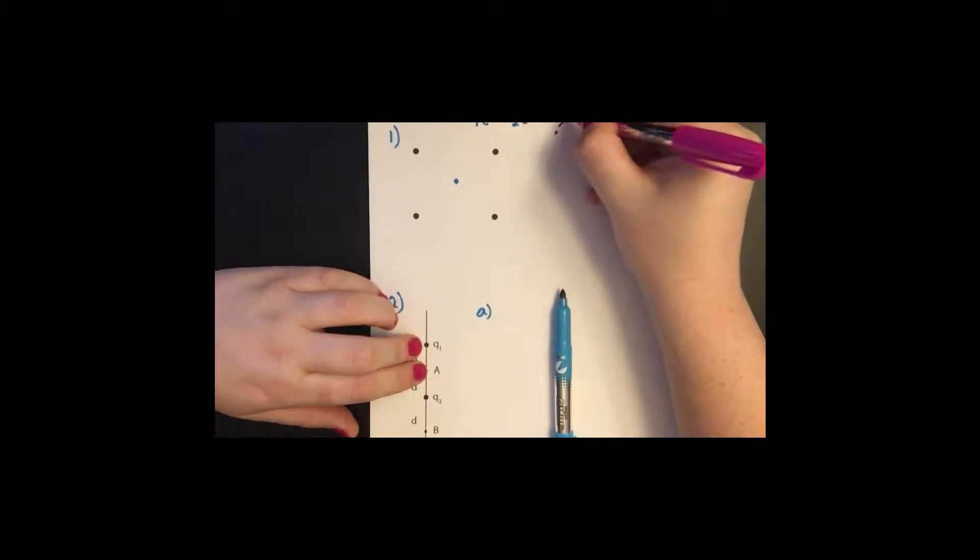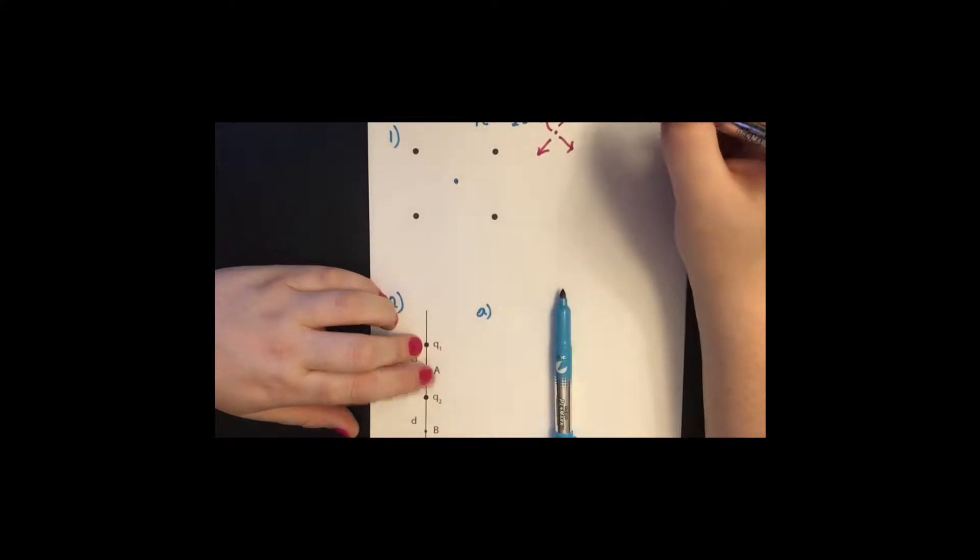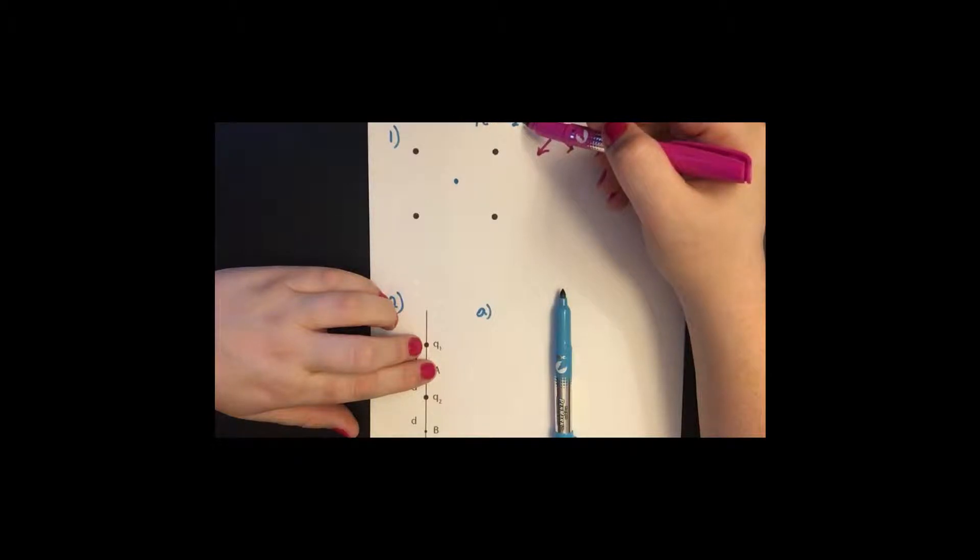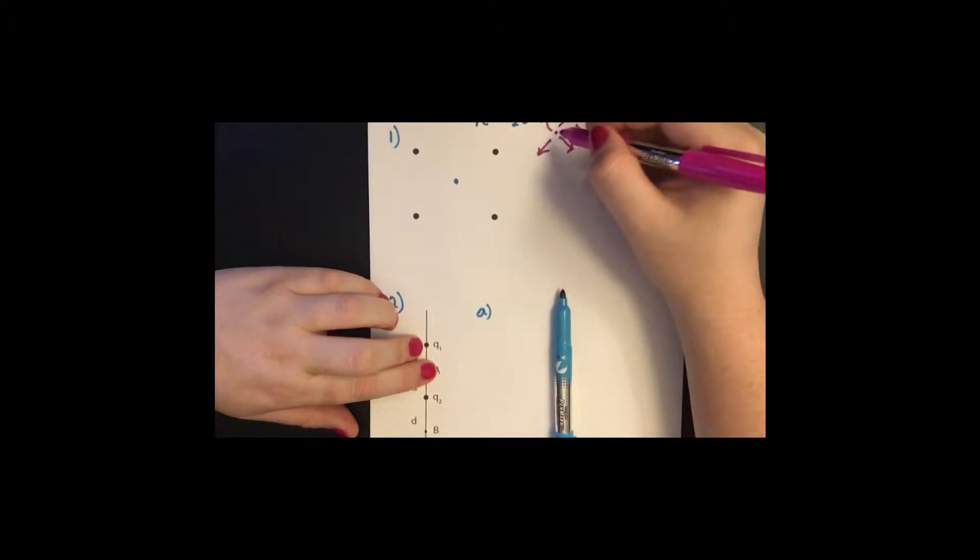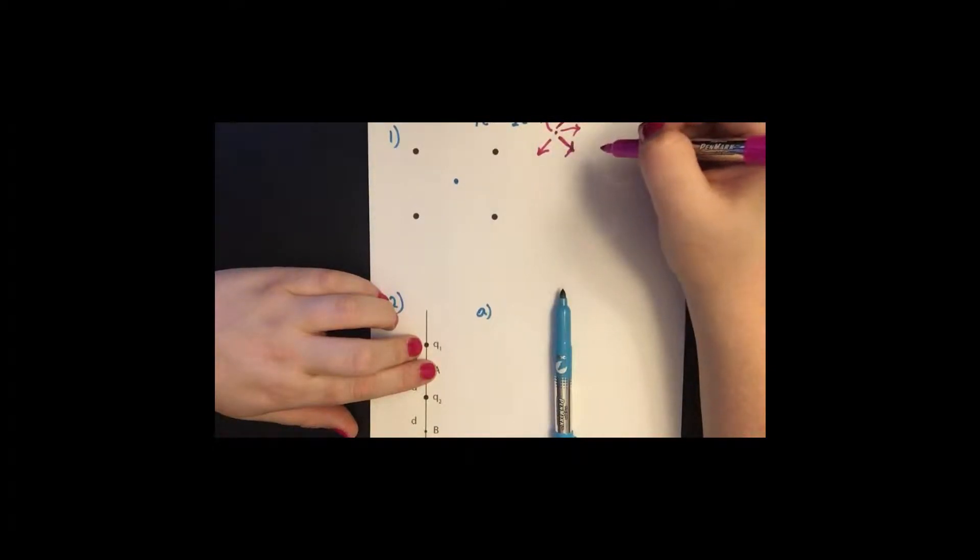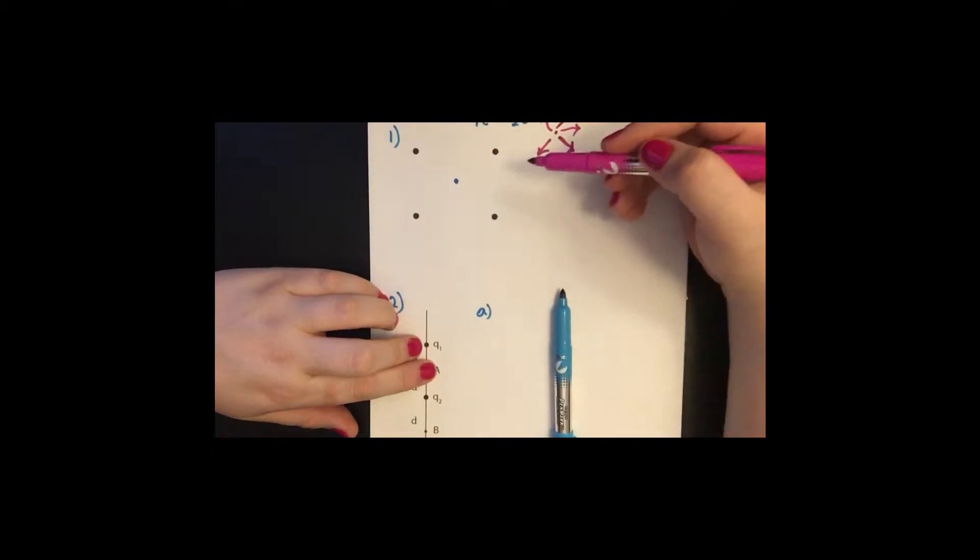So if we want to make sure that our field is pointing to the right, which one of these charges has a bigger field in the first place? Well, for a positive charge, the field always points away from the charge. And something with a charge of two coulombs is going to have twice the magnitude as a charge with one coulomb. So if we want the net force to be pointing to the right and not to the left, we're going to want the bigger charges pointing in the right direction.